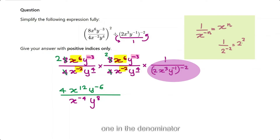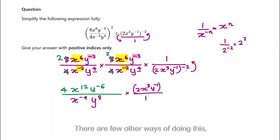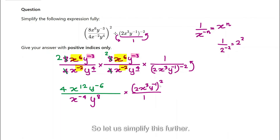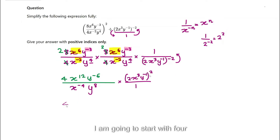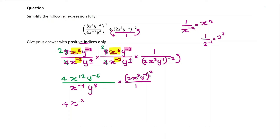I'm going to do the same here — bring this to the top so the negative becomes positive. So I get 1 in the denominator, and 2x cubed y to the power of negative 1, to the power of negative 2. There are a few other ways of doing this, but I'm doing the basic, most straightforward way. I need to get all positive indices, so x to the power of 12 is okay. However, x to the power of negative 4 — I can move it to the top.